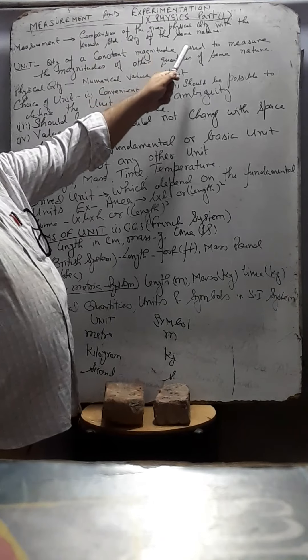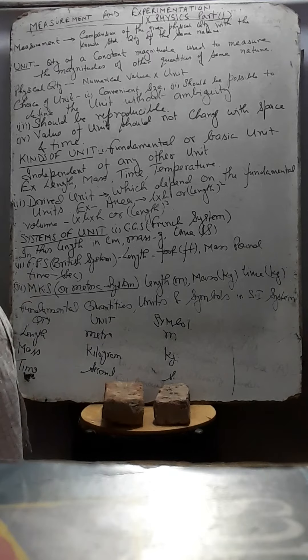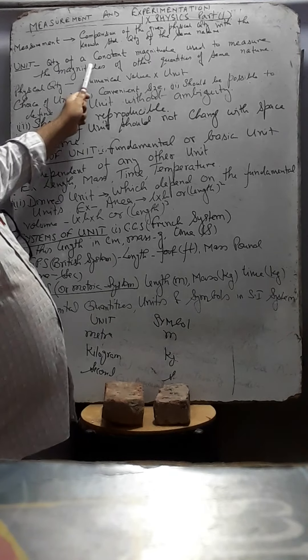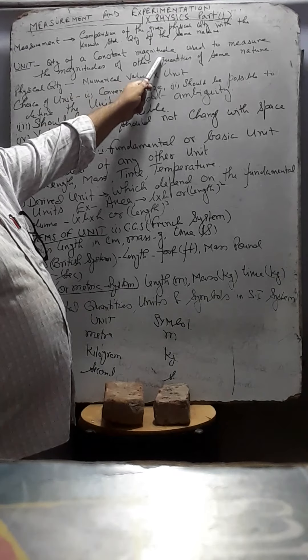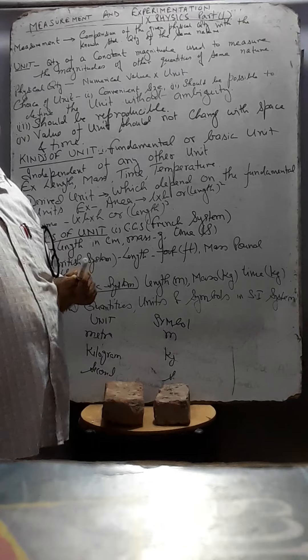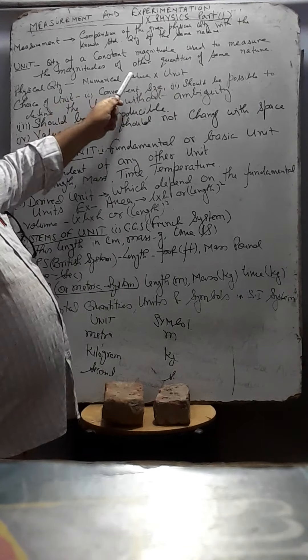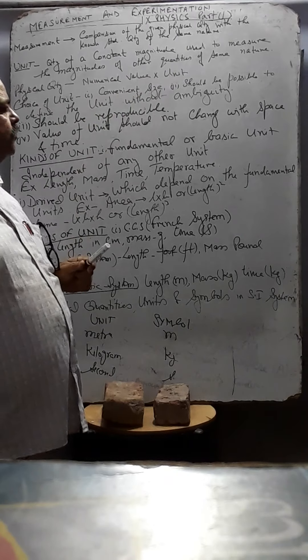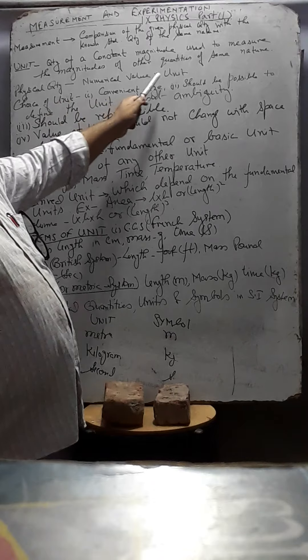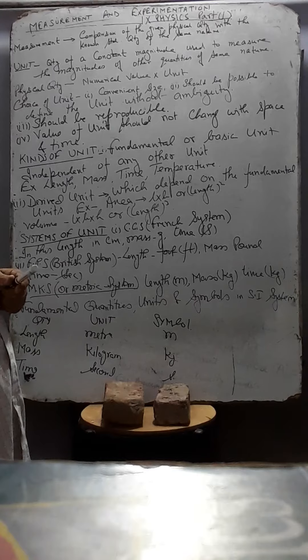Unit in which it is measured. Unit means from where it starts. Quantity of the constant magnitude used to measure the magnitude of other quantity of the same nature. Constant magnitude used to measure the magnitude of other quantity of the same nature. So, we can write, physical quantity is the numerical value into unit. Physical quantity, physical numerical value into unit.